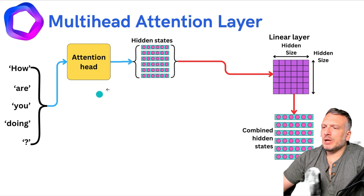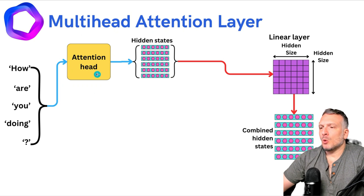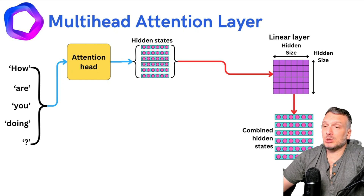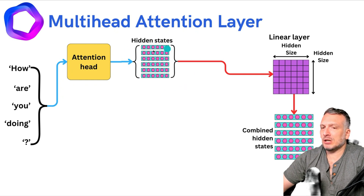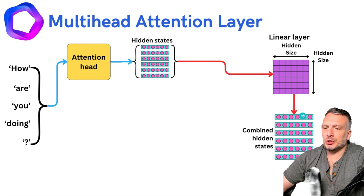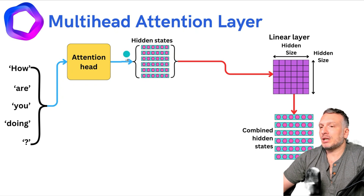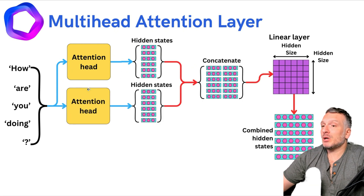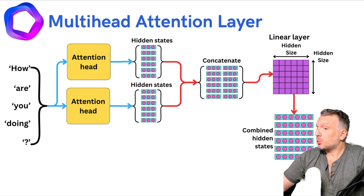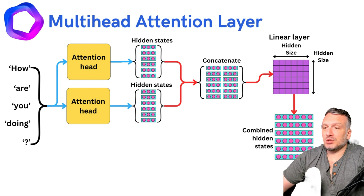Let's look at the case where we have one attention head. One attention head is equivalent to the self-attention layer we saw originally. We have a hidden state coming out from this attention layer, and the linear layer produces a set of hidden states with the same shape. Now, if we imagine we have two attention heads, we need to do something about the size of the hidden states coming out of those attention heads.